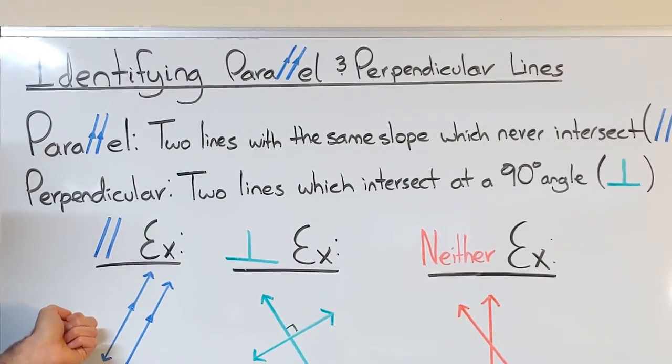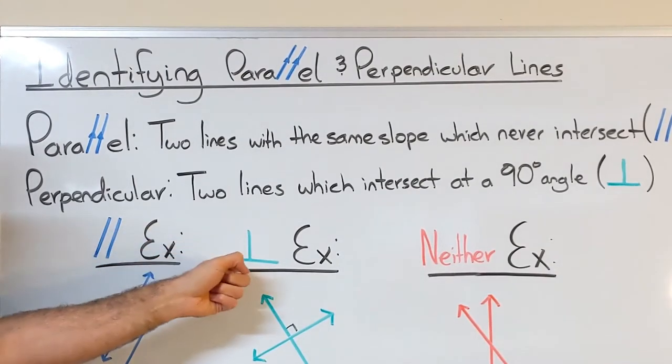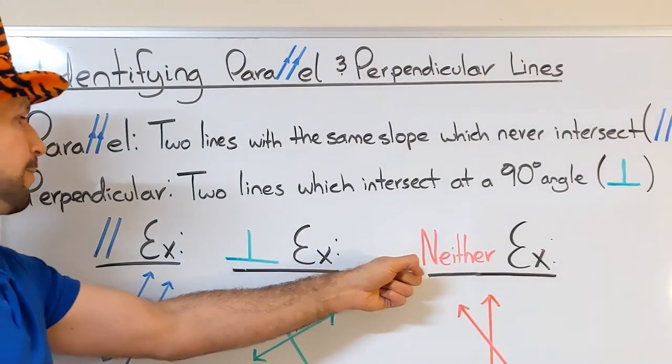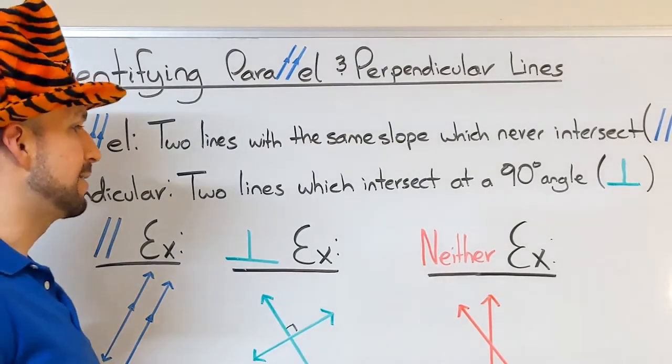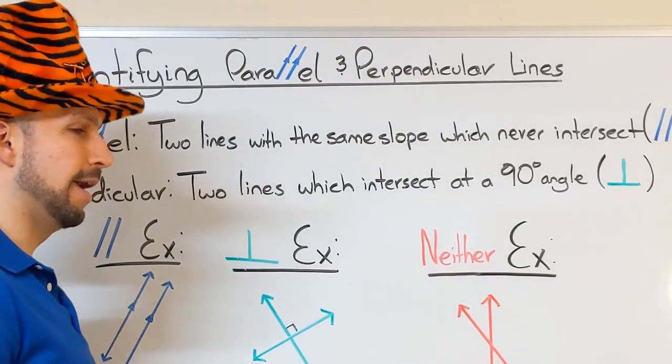Now we just have to make the decision of those which will intersect, whether they're perpendicular or neither. Perpendicular lines always intersect at right angles. So if it's in a geometric diagram, you'll generally see that little right angle symbol. If they do not intersect at right angles, then obviously they're neither.